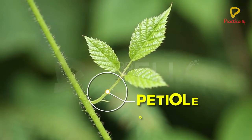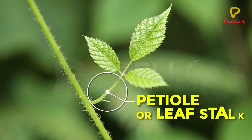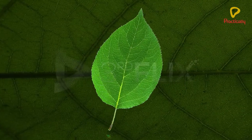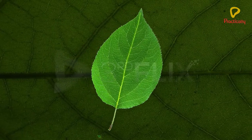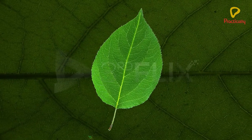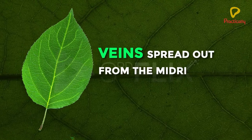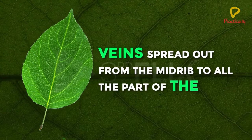There is a midrib in the center of the lamina. A large number of veins spread out from the midrib to all the parts of the leaf.